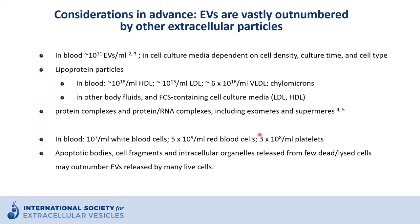In blood, one can find about 3 times 10 to the 8th platelets per ml, which is almost as many as there are extracellular vesicles. In fact, platelets can be considered a specific type of extracellular vesicle, as they also derive by pinching from megakaryocytes. There are about 10 to the 7th white blood cells and almost 10 to the 10th red blood cells, so there are almost as many cells as extracellular vesicles in blood. There are also apoptotic bodies, cell fragments, and intracellular organelles released from dying cells, so the quality of harvesting extracellular fluids and cell culture media is very important.